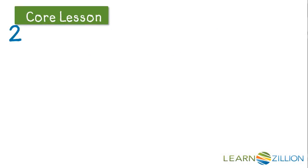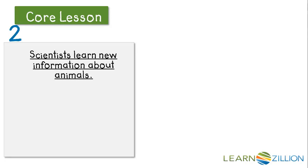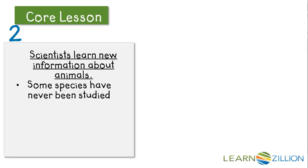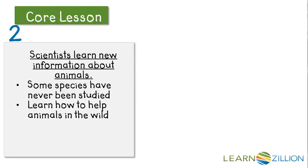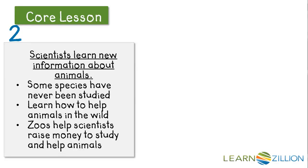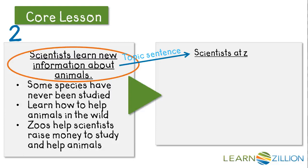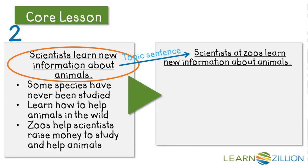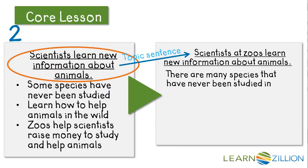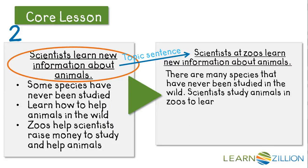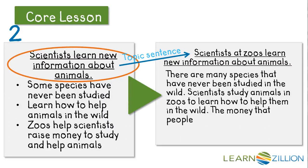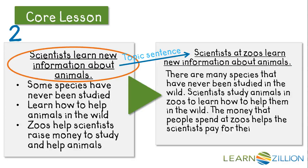Let's see how that works with my second supporting reason: scientists learn new information about animals. Some species have never been studied, and scientists learn how to help animals in the wild by observing them in captivity. Also, zoos help scientists raise money to study and help animals. I want my main supporting reason to become the topic sentence of my next paragraph: "Scientists at zoos learn new information about animals." Supporting details: "There are many species that have never been studied in the wild. Scientists study animals in zoos to learn how to help them in the wild. The money that people spend at zoos helps the scientists pay for their studies."